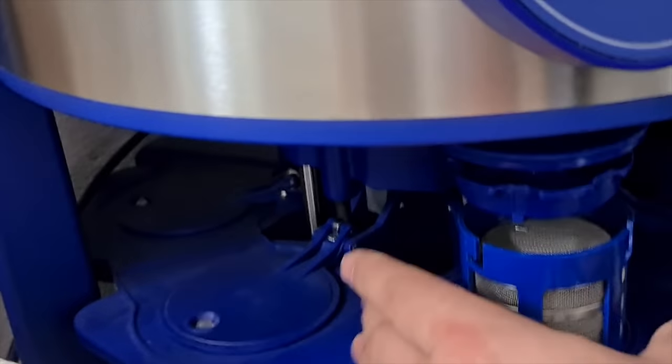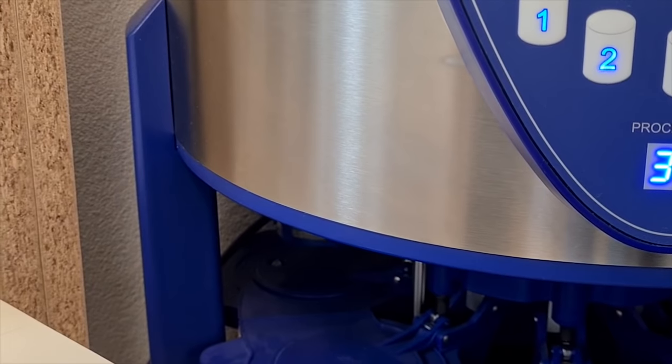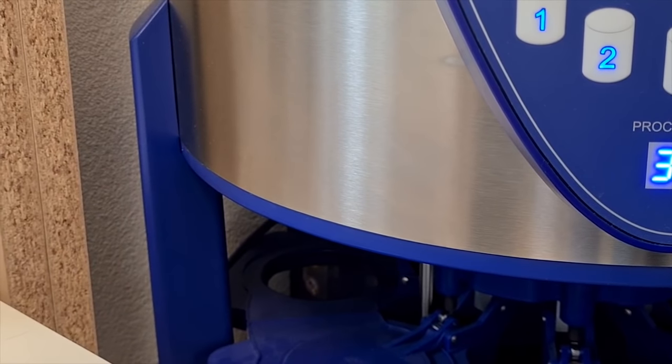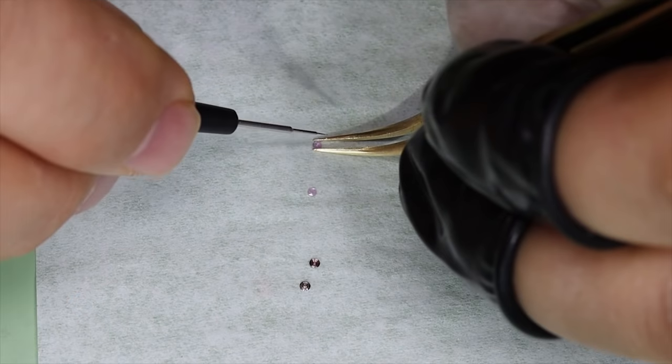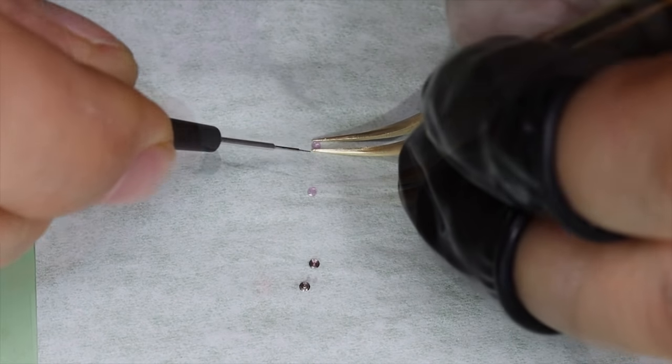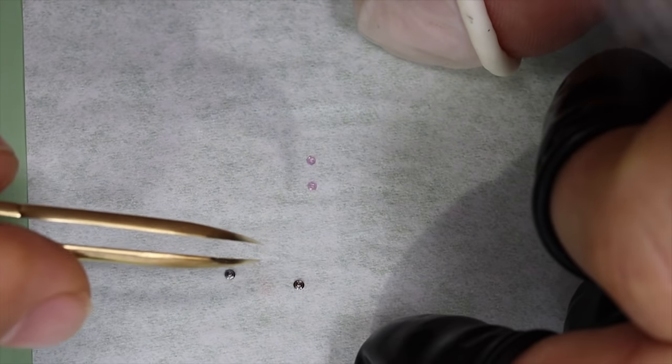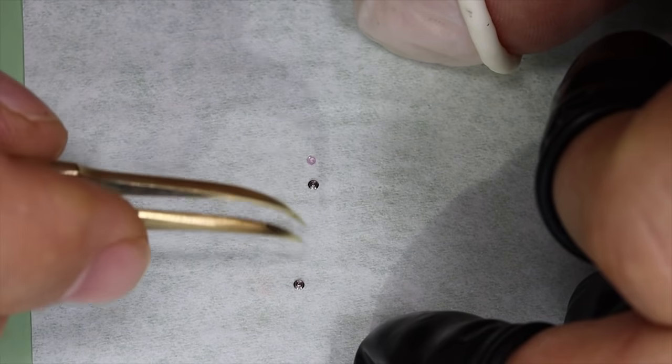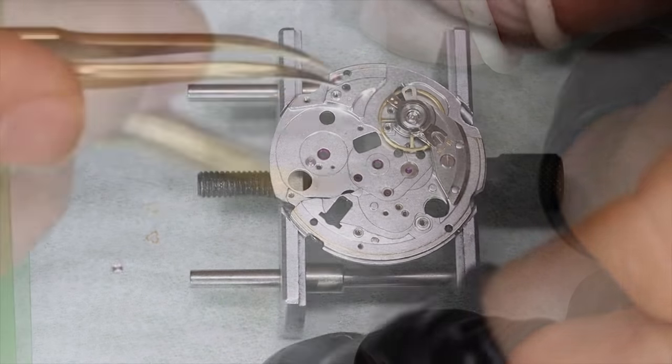Now this is an automated cleaning machine. It's certainly overkill for someone who just wants to do this as a hobby. You can find cleaning machines around the same concept for around let's say five, six hundred euros or dollars. Alright, we got everything back from the cleaning machine. First thing we're going to do as always is to oil the shock settings. Seiko of course uses their Diashock shock setting, which is quite good.